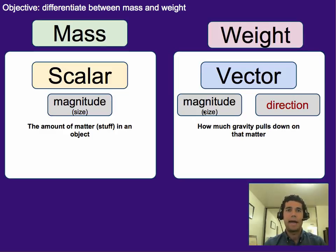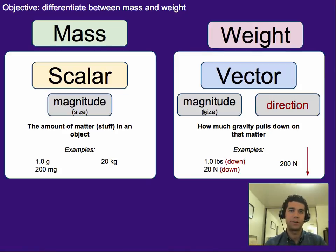Mass is the amount of matter or stuff in an object, whereas weight is how much gravity pulls down on that matter. So the weight is the force on the matter, whereas the mass is just how much matter there is. Some examples: 1 gram, 200 milligrams, 20 kilograms, those are all examples of mass. Some examples of weight are 1 pound, the direction would be downwards, or 20 newtons. Again, the direction is downwards, or 200 newtons, and you can just draw an arrow to show that it's downwards.